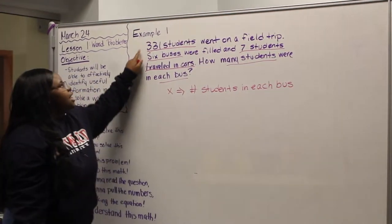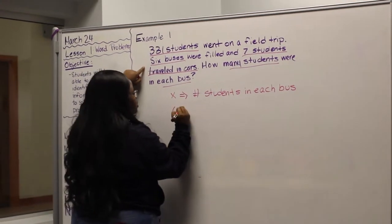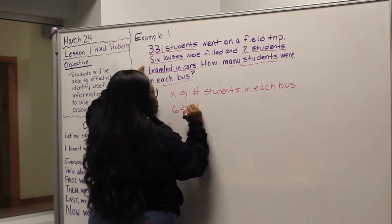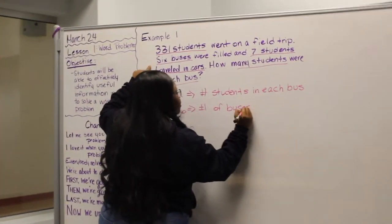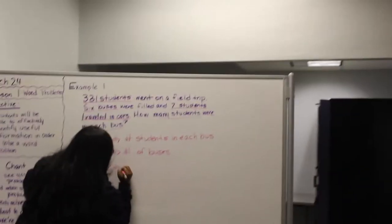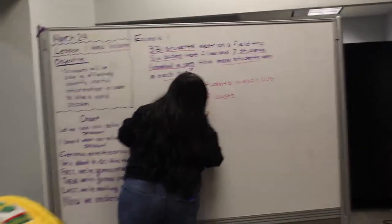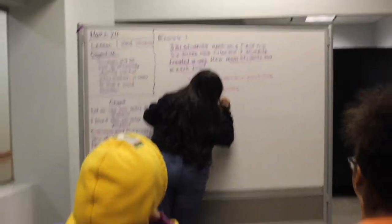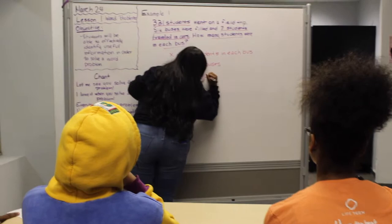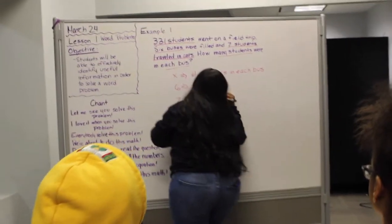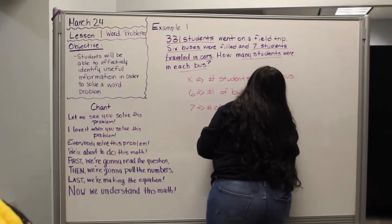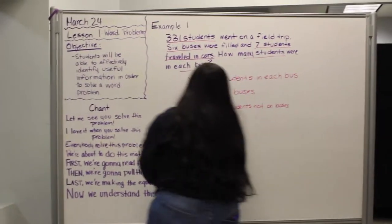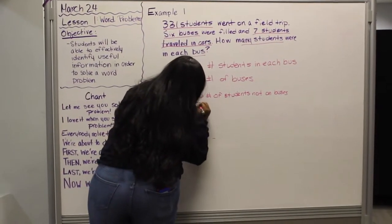Then we're going to write down that there are six buses in total. Number of buses. There are seven students not on the bus. Number of students not on the bus. And then the total number of students is 331.